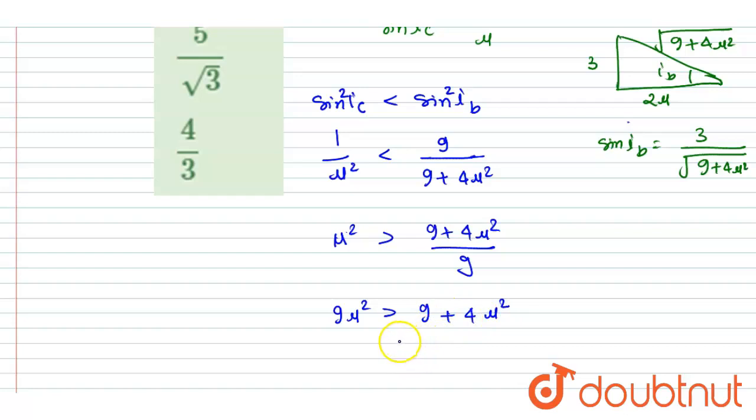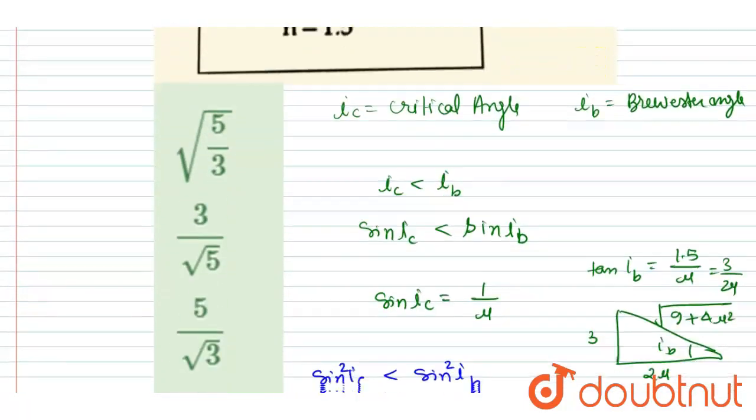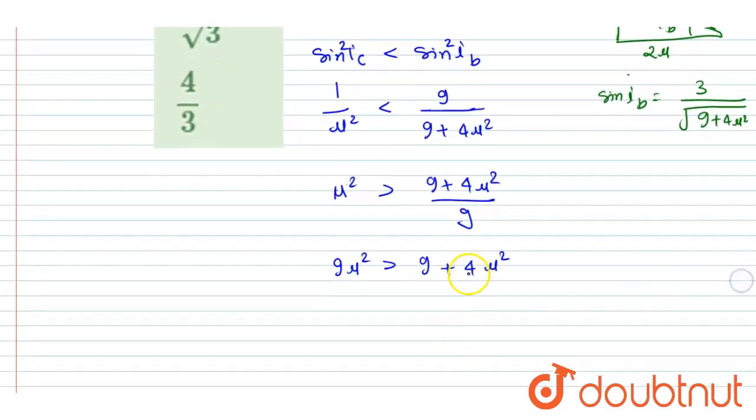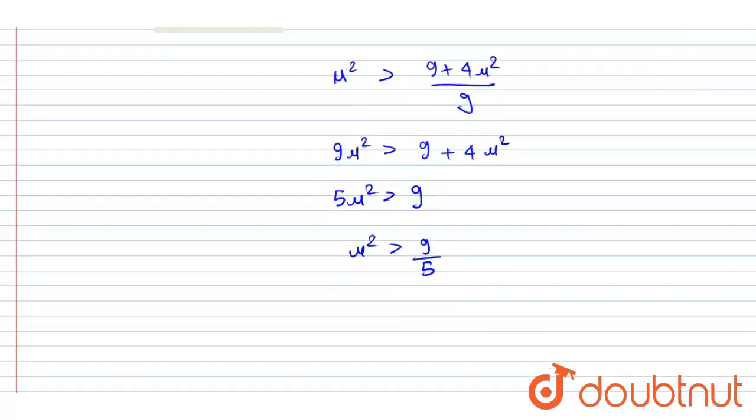Now we want the minimum value of mu, right? So if you send this 4 mu square on this side, you will get 5 mu square should be greater than 9. Mu square should be greater than 9 by 5. So if you take square root on both sides, you will get this relation.